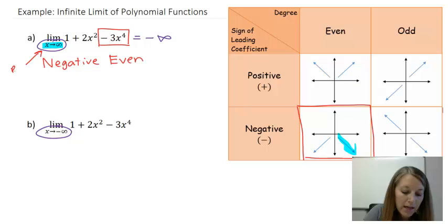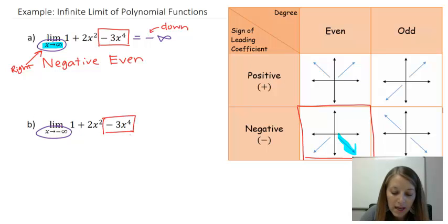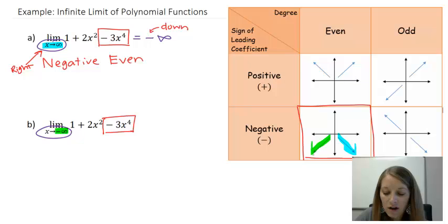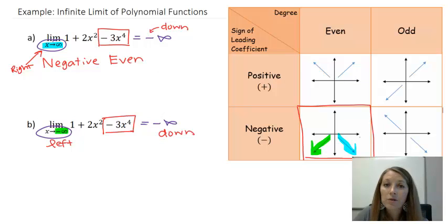A lot of students mix up these positive and negative infinities. We're focusing on the right-hand side of the graph, and our answer is negative infinity because it goes down there. For part B, the leading term is the same — still negative even. When x approaches negative infinity, we look at the left-hand side of the graph, and the graph also goes down forever. So the answer is also negative infinity. Both answers are negative infinity because the graph goes down on both extremes.